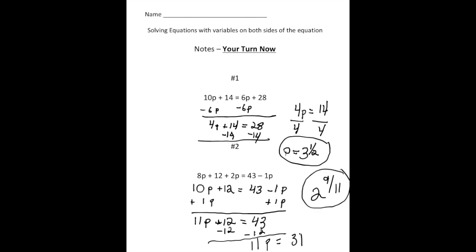And there's your answer. Okay. So again, the way I got that is I divided 31 by 11 to get P by itself. All right. How'd you do?